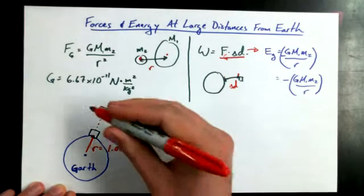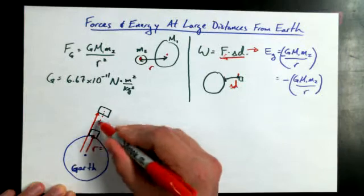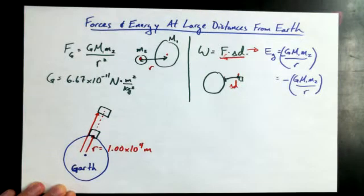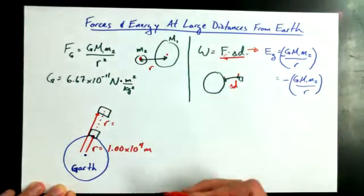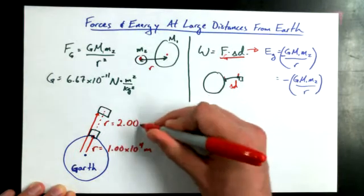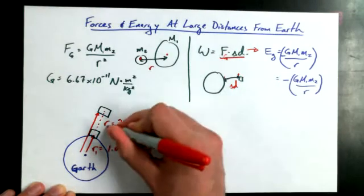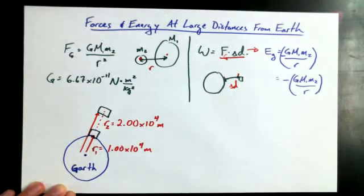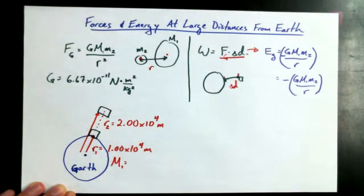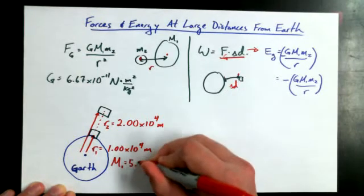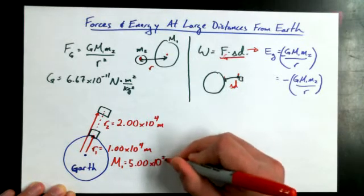And I want to take my object up to a height so that its new distance away from the center of mass of planet Garth is equal to 2.00 times 10 to the power of 4 meters. And so I can say this is position 1, and this is position 2 for my mass. Now, the mass of the planet, we'll call it mass 1, is equal to 5.00 times 10 to the power of 20 kilograms.